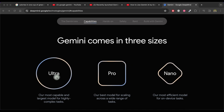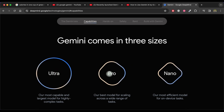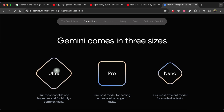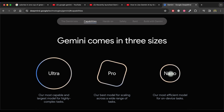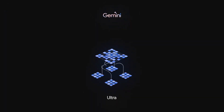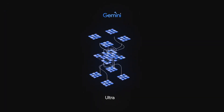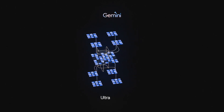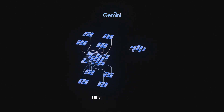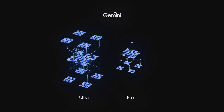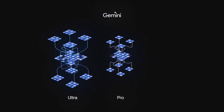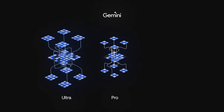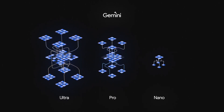Google has built three versions of Gemini with different sets of skills. The largest is Gemini Ultra, which is designed to tackle complex tasks and will be released in 2024. Gemini Pro, the mid-tier offering, has been rolled out to Google Bard chatbot and will continue rolling out to many more Google products in coming months. The Nano version is the smallest and runs locally on devices such as the Google Pixel 8 Pro smartphone.